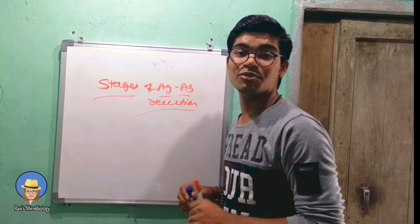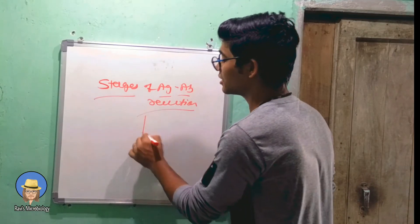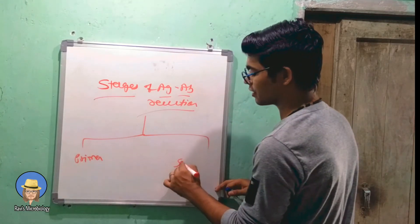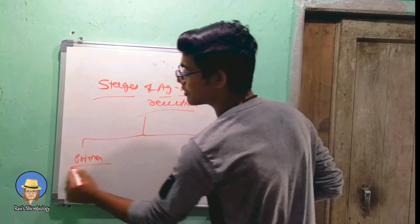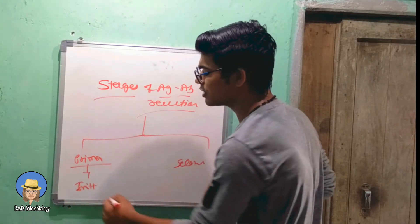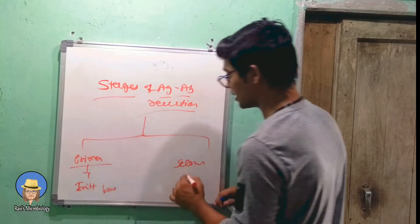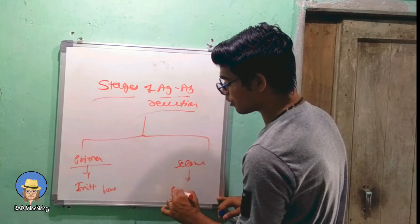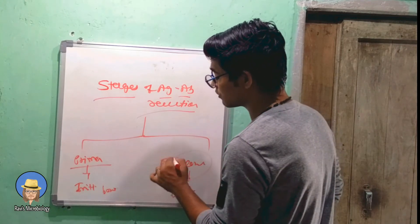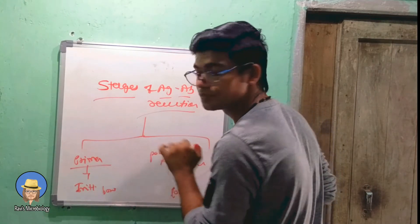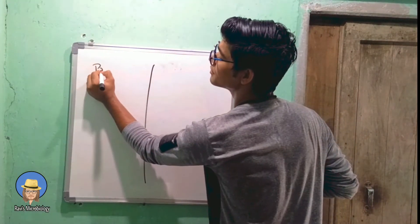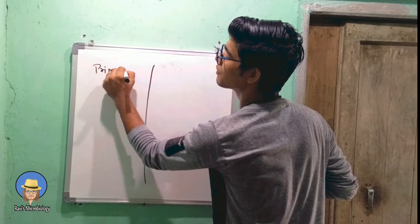This actually occurs in two stages: primary and secondary. In the primary stage, initial energy is required and initial bonding occurs. In the secondary stage, non-covalent bonds occur, which is why this stage is very crucial and very powerful. We are going to talk about both stages.